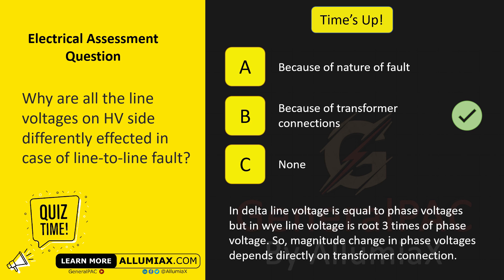In delta connection, line voltage is equal to phase voltage, but in wye connection, line voltage is root 3 times the phase voltage. So the magnitude change in phase voltages depends directly on transformer connections.